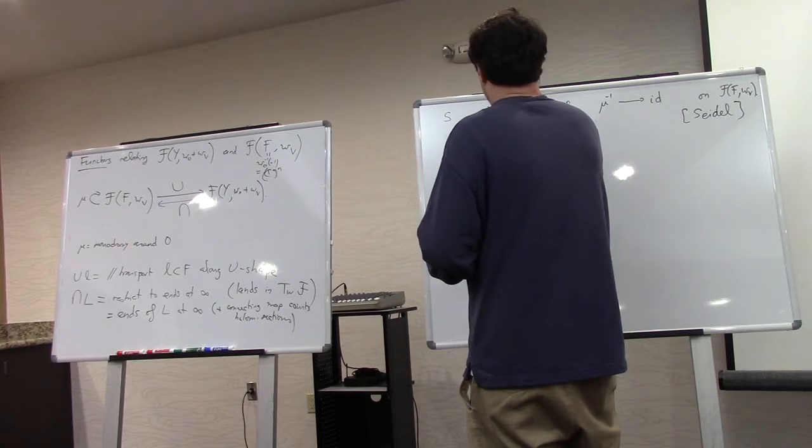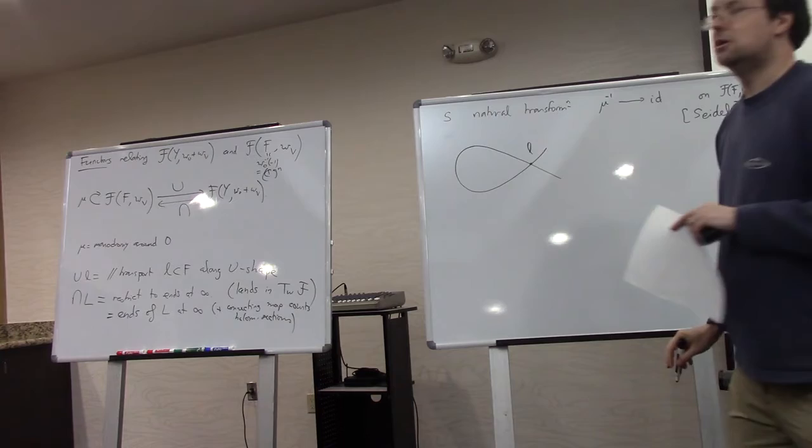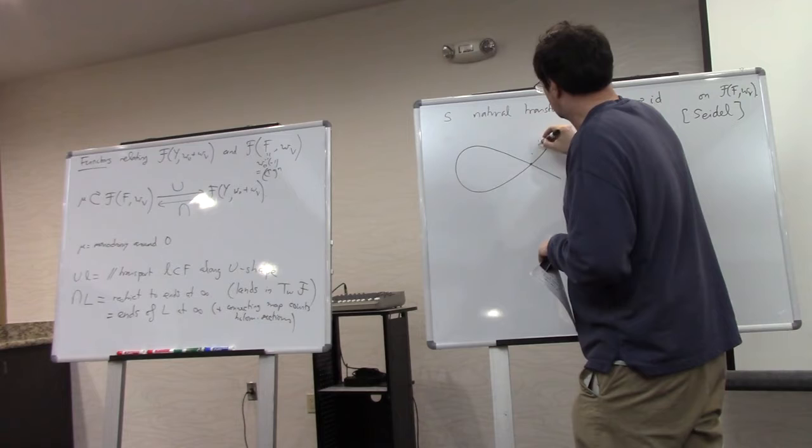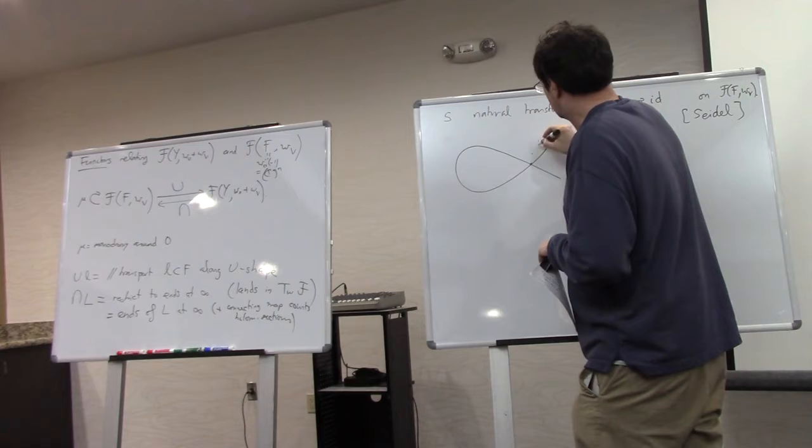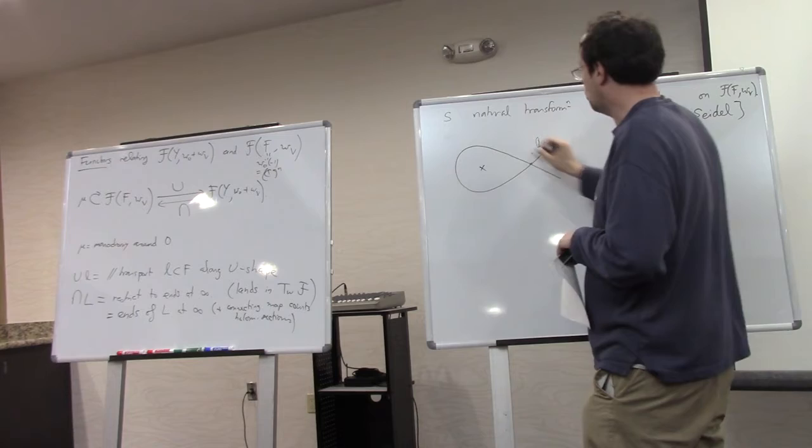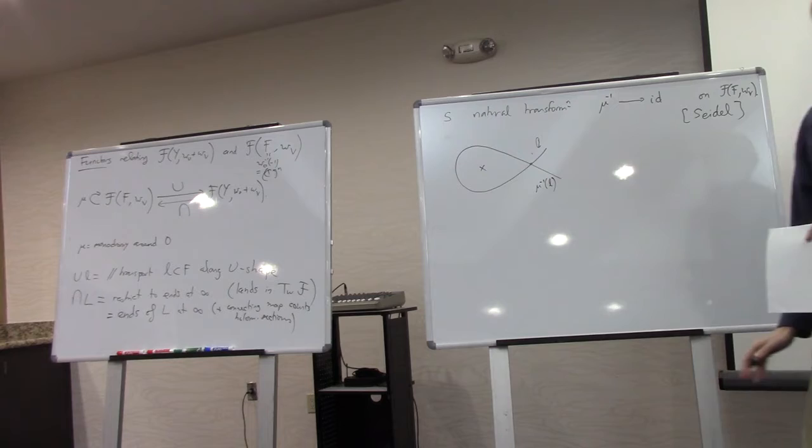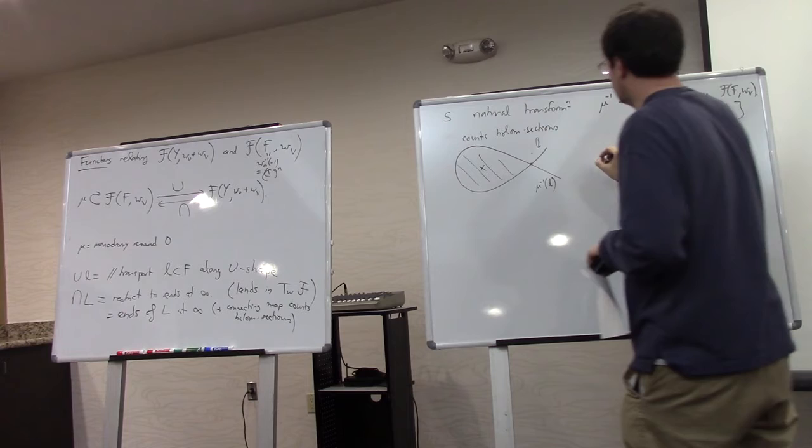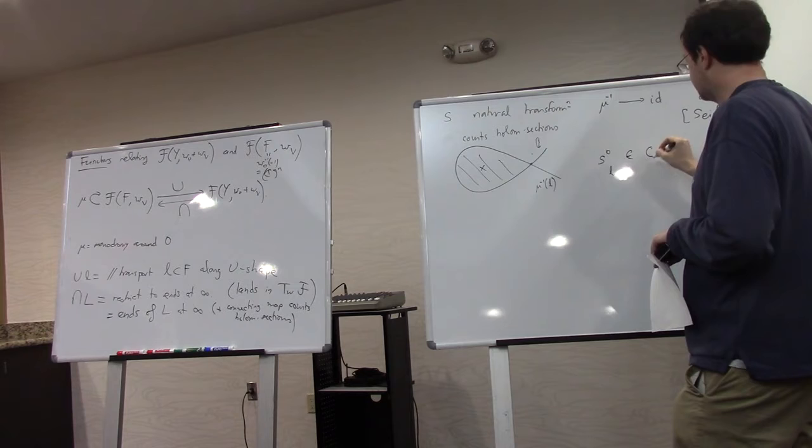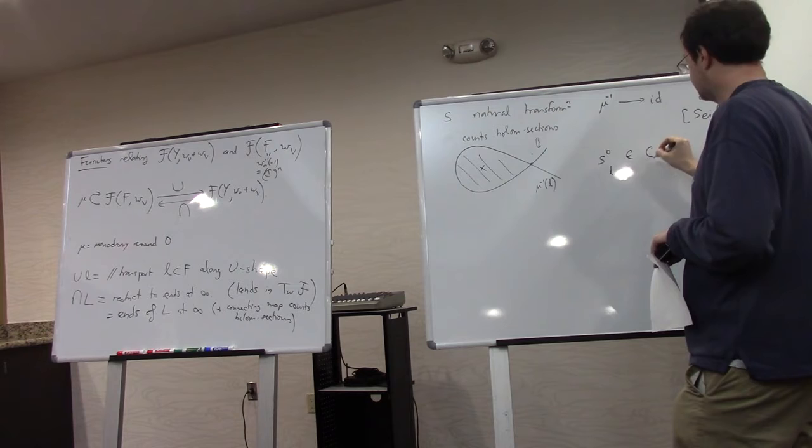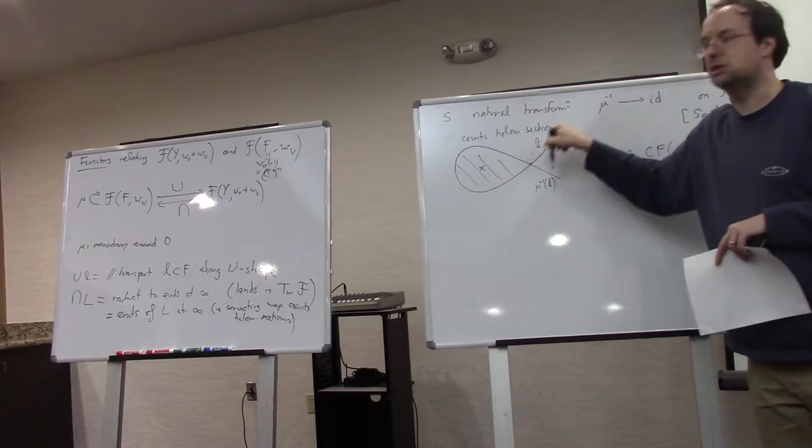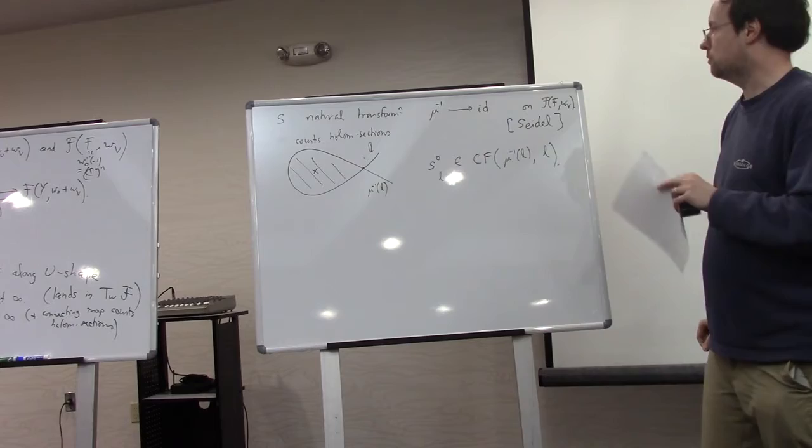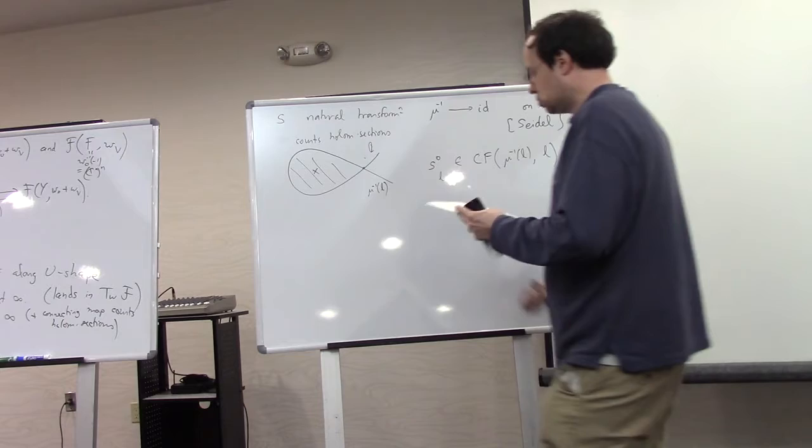which for today at least, I want to think of it as going from the inverse of the monodromy to the identity functor. And there's other versions that go from identity to mu. And which one you get depends on your convention for the cup functor, which way you go. But I think this one works properly. So this natural transformation finds its roots inside of a very long-time work. So what it does is, let's say that I have a Lagrangian in the fiber. And let's transport it along. I could just do it along the U shape, but for the sake of making it more visible. So I take a Lagrangian L in the fiber. I transport it clockwise around the central fiber and end up at the inverse image under the monodromy. And then I want to count holomorphic sections.